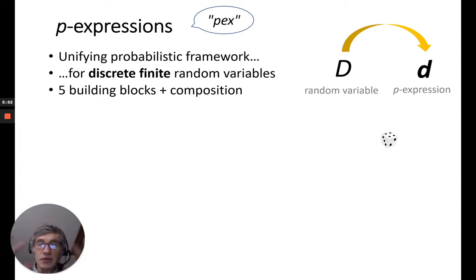Okay, first of all, the first part, how to model this kind of problem. Here, P-Expressions, it's basically a framework that defines five building blocks with composition between these building blocks. Again, it's limited only to discrete and finite random variables. So, the goal is to take a random variable, a big D, and model it as a P-Expression, a small d. The nickname for this P-Expression is PEX.